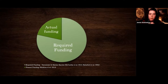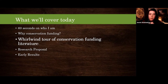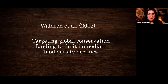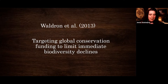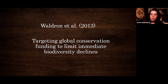$100 billion a year compared to everything else we spend money on should be achievable. The Waldron et al. paper is called 'Targeting Global Conservation Funding to Limit Immediate Biodiversity Declines.' I actually found this paper on my birthday — it opened my eyes because it was close to what I thought my research might be. When I found it I said 'happy birthday to me from Waldron et al.'